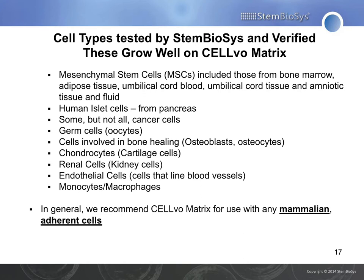Most of the data I showed you was from MSCs because our original product was developed with MSCs in mind. However, we've used our Selvo matrix for many cell types, both in our hands and with our collaborators. Below is a non-exhaustive list of cell types that grow well on Selvo matrix: MSCs from various tissues of the body, human islet cells, some but not all cancer cells, oocytes, cells involved in bone healing, chondrocytes, renal cells, endothelial cells, and monocytes and macrophages. In general, we recommend Selvo matrix for use with mammalian adherent cells.